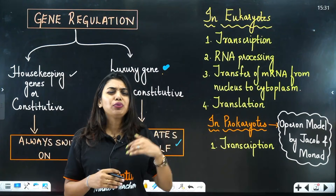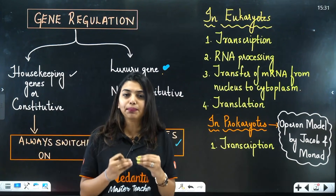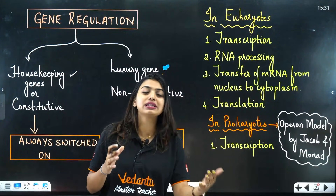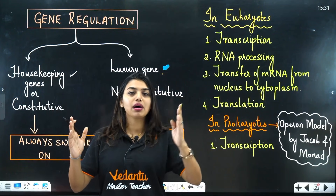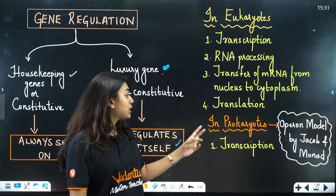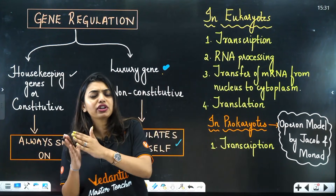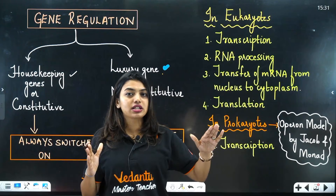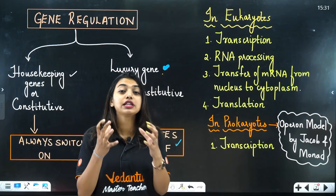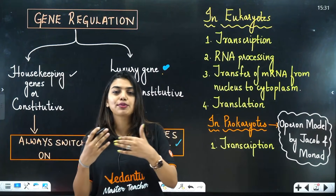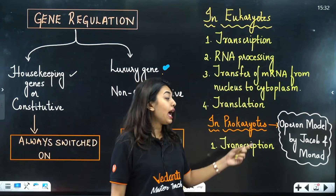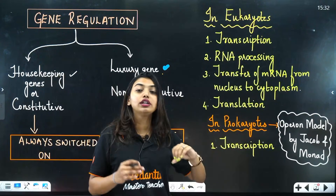The last switch-off point in eukaryotes is during translation. But in prokaryotes, since they are simple organisms with polycystronic genes — meaning one gene codes for multiple proteins — transcription and translation are coupled. RNA processing does not happen in prokaryotes, so the gene can only decide to switch off during transcription.